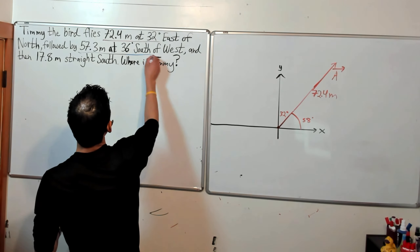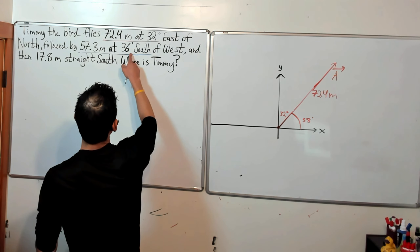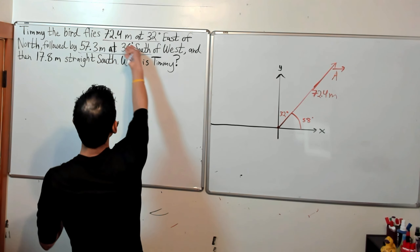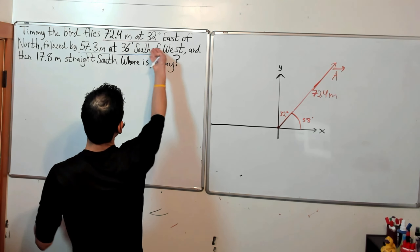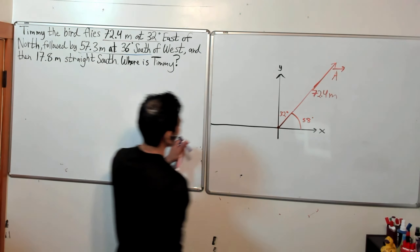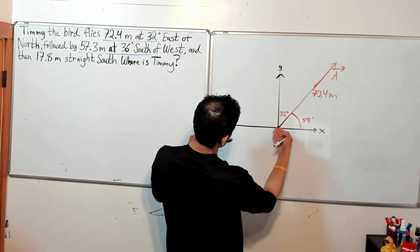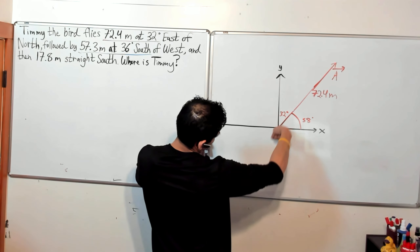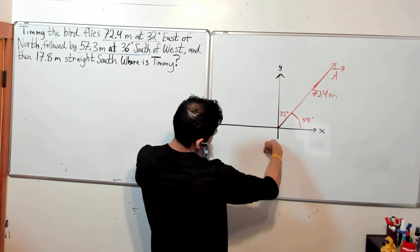So 57.3 meters at 36 degrees south of west — we're going to be going something like this.